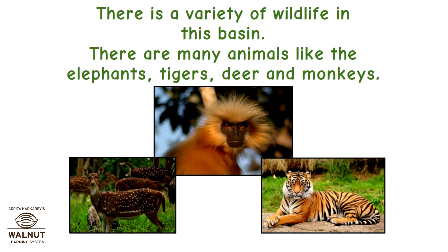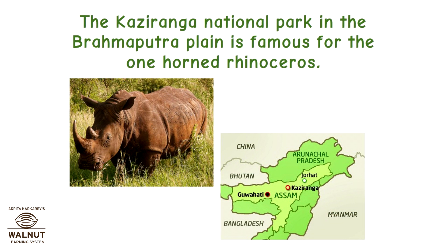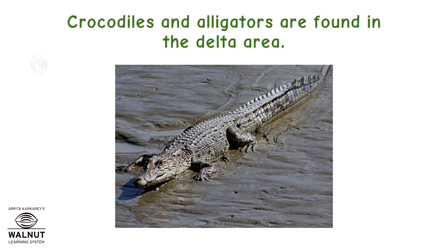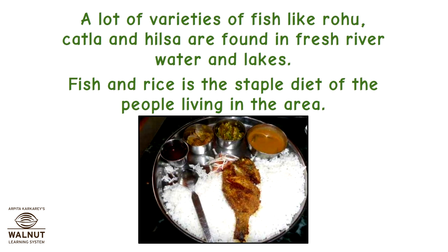There is a variety of wildlife in this basin. There are many animals like elephants, tigers, deer, and monkeys. The Kaziranga National Park in the Brahmaputra plain is famous for the one-horned rhinoceros. Crocodiles and alligators are found in the delta area. A lot of varieties of fish like rohu, katla, and hilsa are found in fresh river water and lakes.